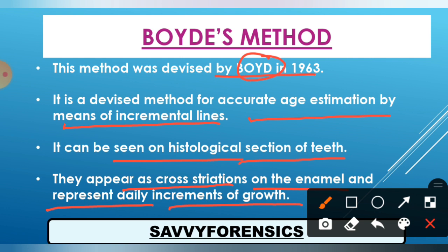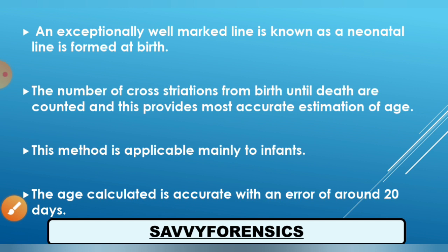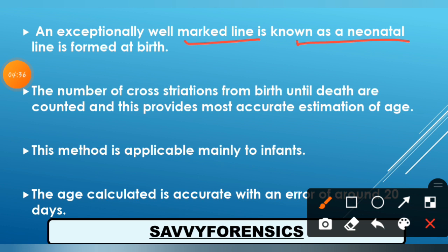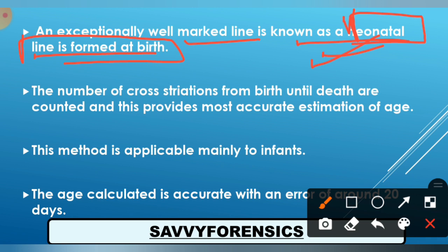Boyd was a scientist who described this in 1963. Age estimation is done by means of incremental lines present on the enamel. An exceptionally well-marked line is known as the neonatal line, which is formed at birth. These exceptionally marked lines formed at the time of birth are called neonatal lines. The number of cross striations from birth until death are counted, and this provides the most accurate estimation of age.